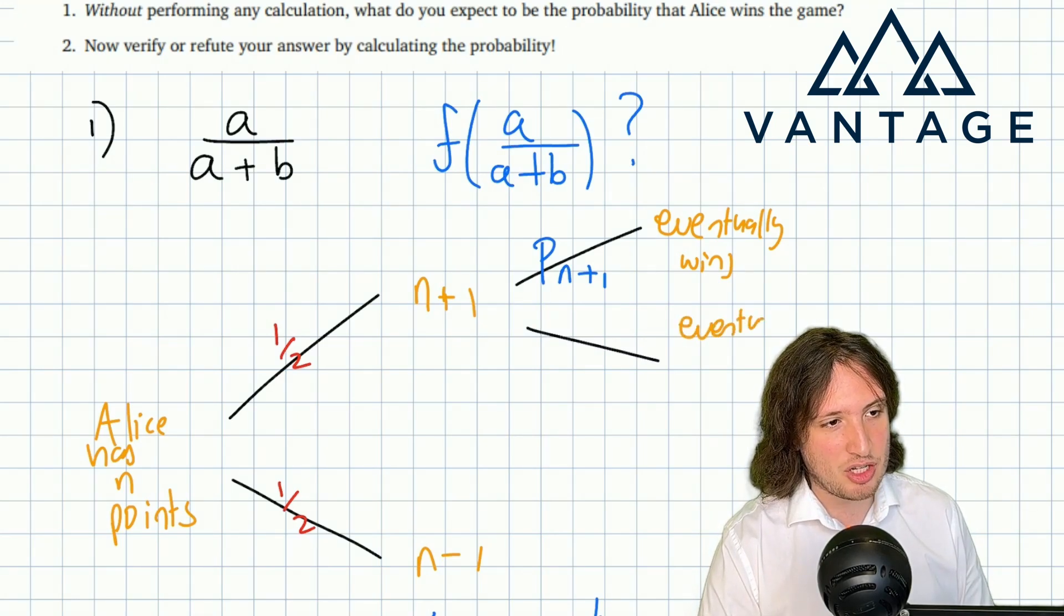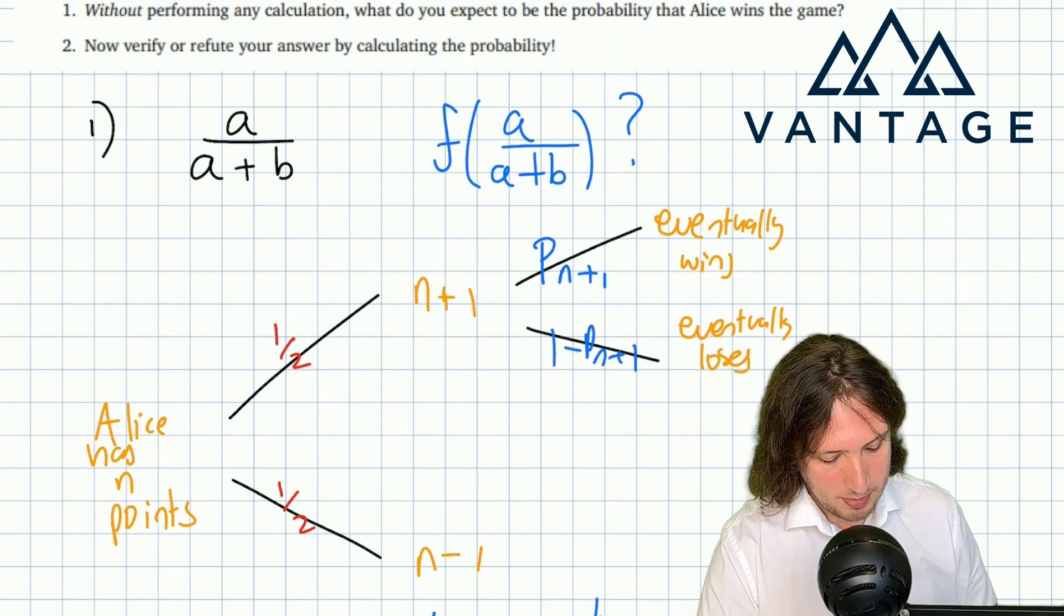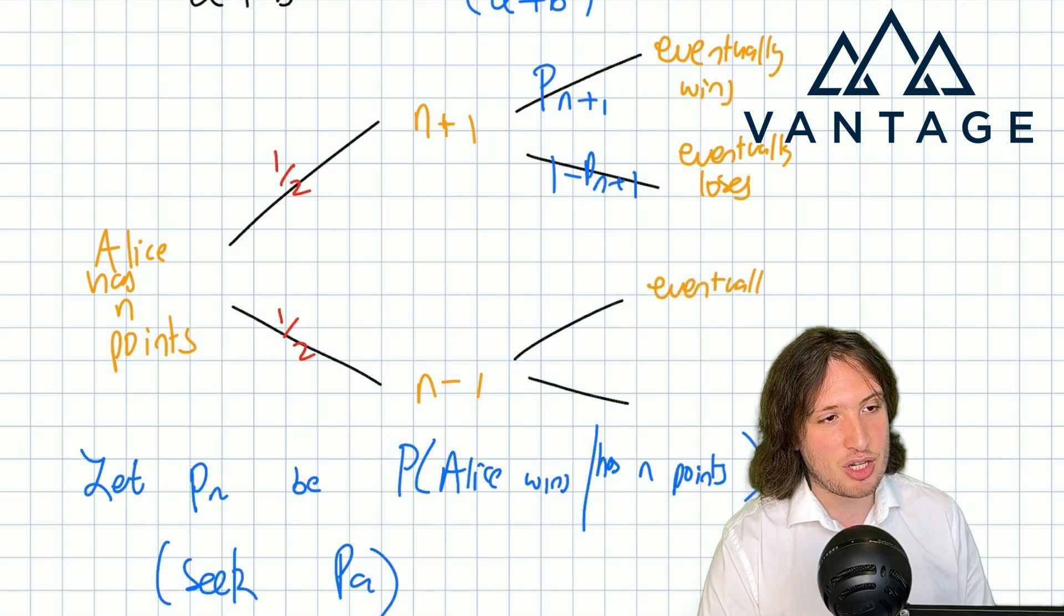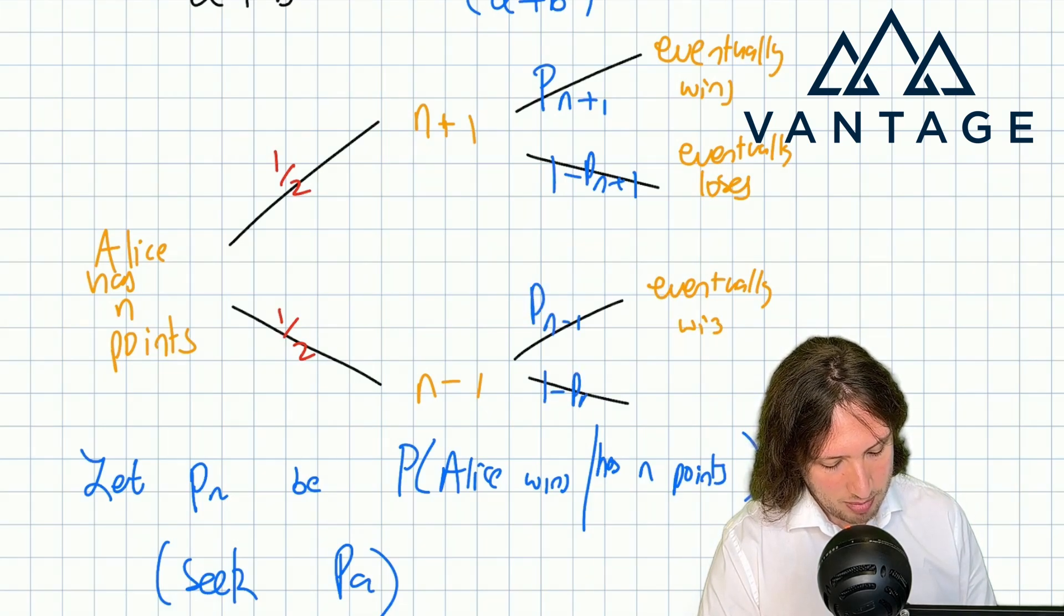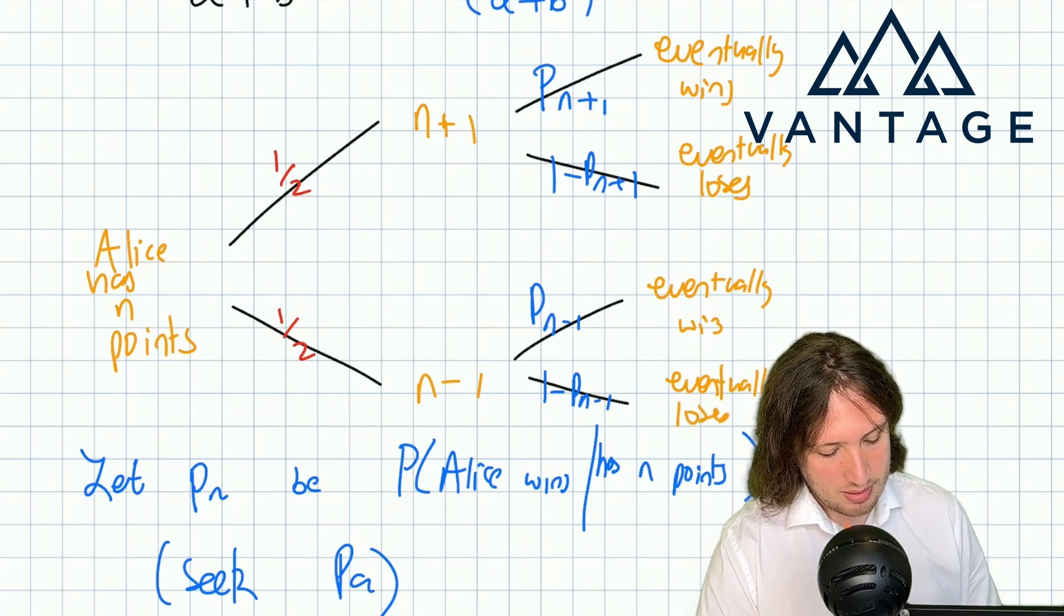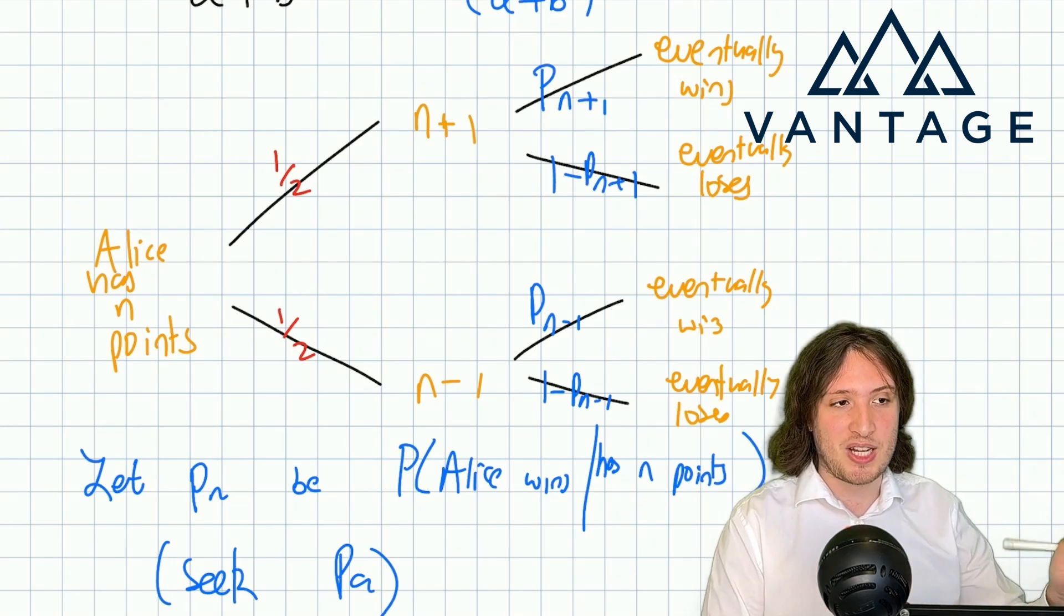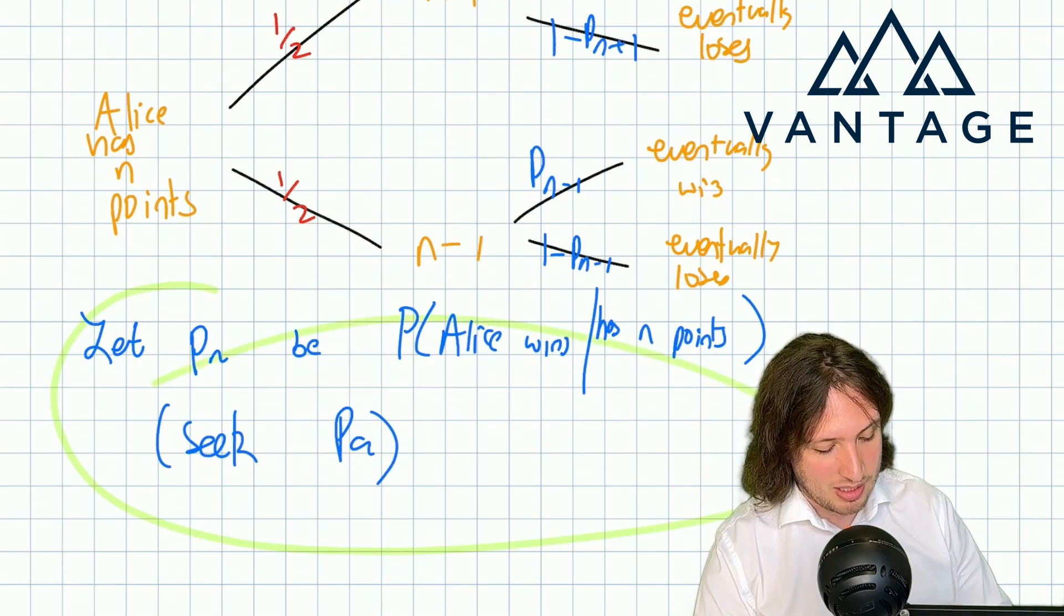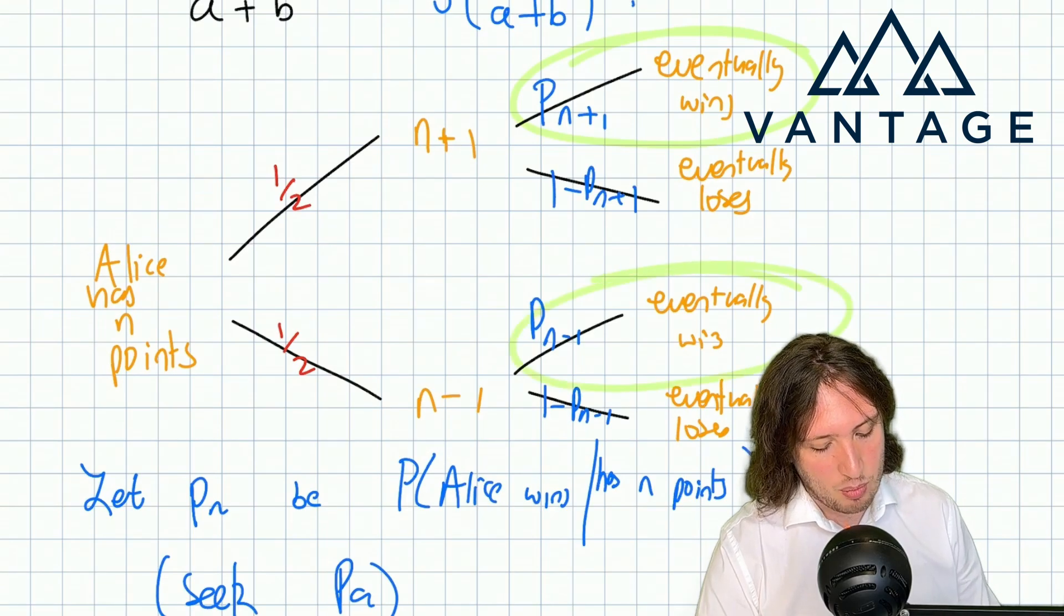And the probability that she eventually loses is 1 minus that from that position. By the same logic here I can say the probability that she eventually wins is P_{n-1} and the probability she eventually loses is 1 minus that. So in our tree, which is now finite because we've collapsed all this infinite branching into these eventually branches that we were able to do by making this definition, this idea is really useful in interview probability, we can now see that I've just got these kind of winning outcomes.